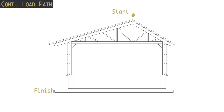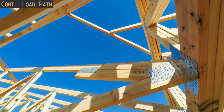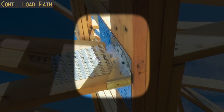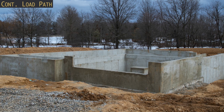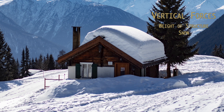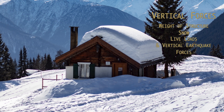The continuous load path is an engineered route for the forces that act on your building to travel. The goal is for all the forces to travel through your structural members and through the connections down to the foundation and into the soil, where the soil can dissipate those forces. Those forces include vertical forces like the weight of the roof, snow, and required live loads, and also horizontal forces such as wind and earthquake.